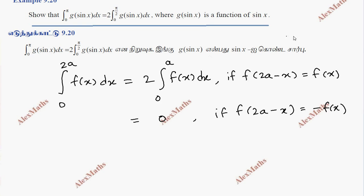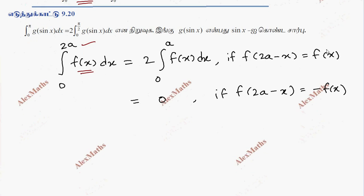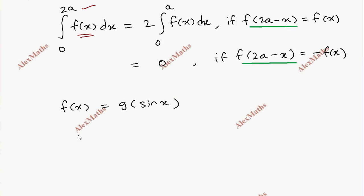So, let us compare: f of x is g of sin x. This is 2a, the upper limit. We need to check the condition — whether f of 2a minus x equals f of x or minus f of x. So f of x equals g of sin x.